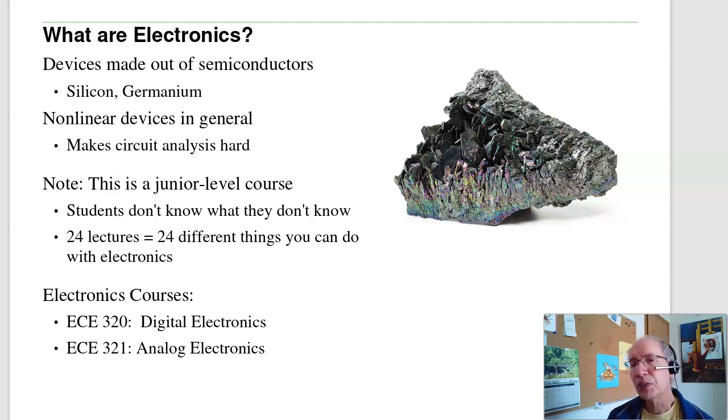Note that this is a junior level course. At the junior level, one problem students have is students don't know what they don't know, so typically we introduce a whole bunch of different things you can do. In this class, we've got 24 lectures, so we're going to be covering 24 different things you can do with electronics.